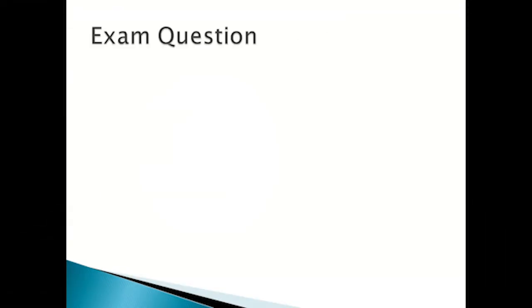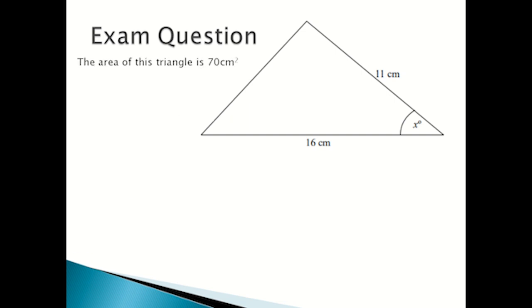Now we're going to look at an exam question. The area of this triangle is 70 centimeters squared. Find the value of x to one decimal point.